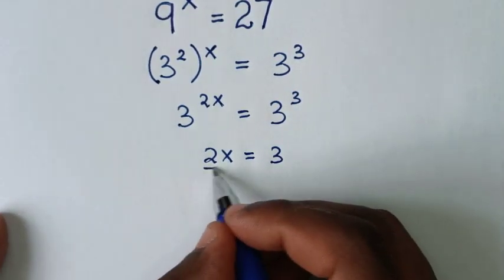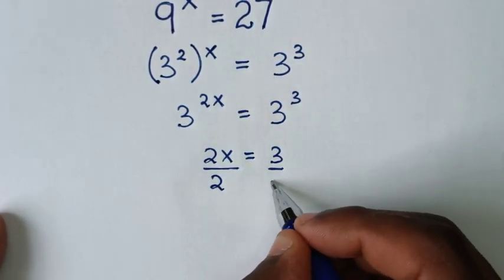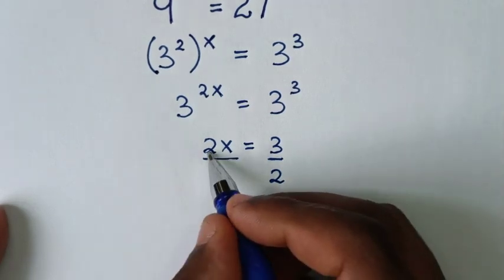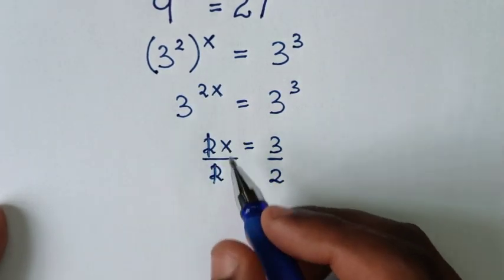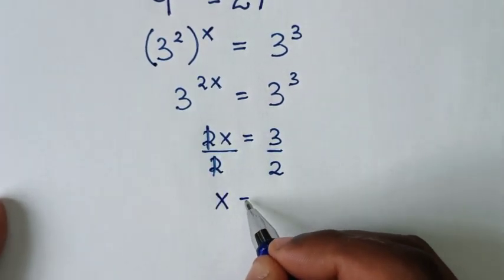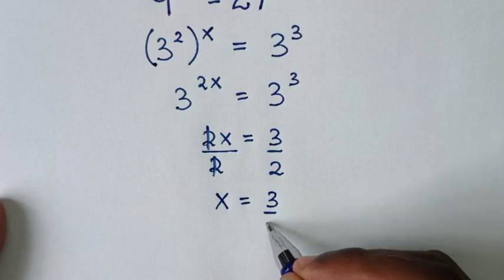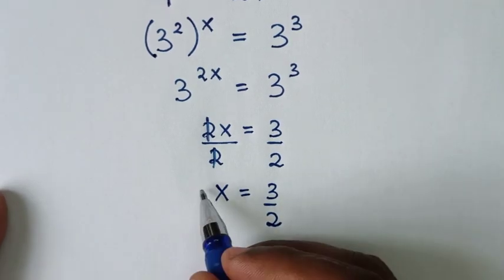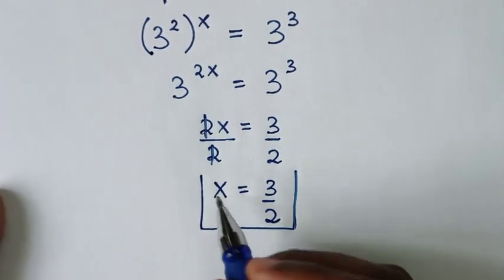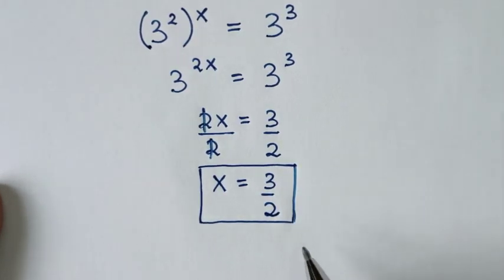Then we divide by 2 in both sides. So these 2 and these 2 will cancel, then it will be x is equal to 3 over 2. Therefore this is the final answer for the value of x in this problem.